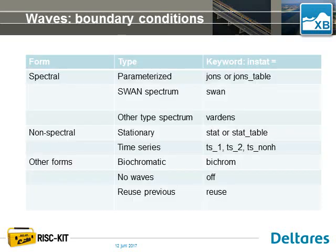In the XBeach model we can apply different types of boundary conditions to the wave action balance, for instance spectral boundary conditions such as JONSWAP-type spectral boundary conditions, or other non-spectral boundary conditions such as stationary wave conditions or bichromatic conditions. The table shows the various keywords you would apply in XBeach to force these types of boundary conditions.